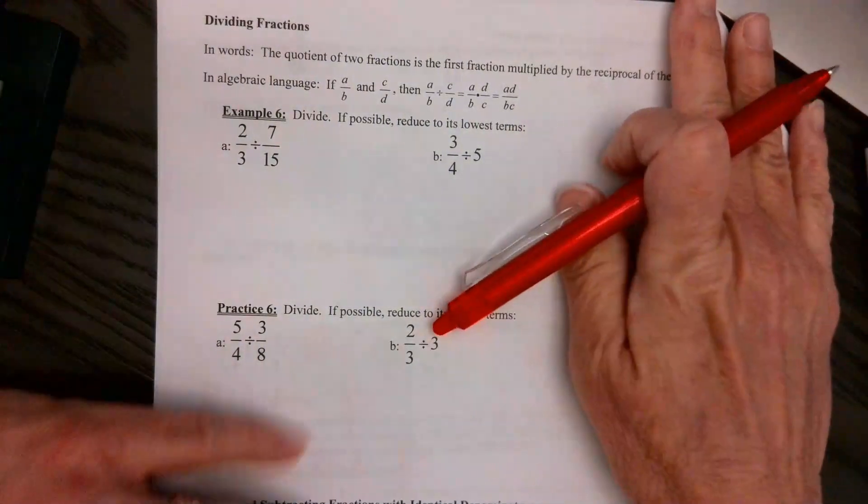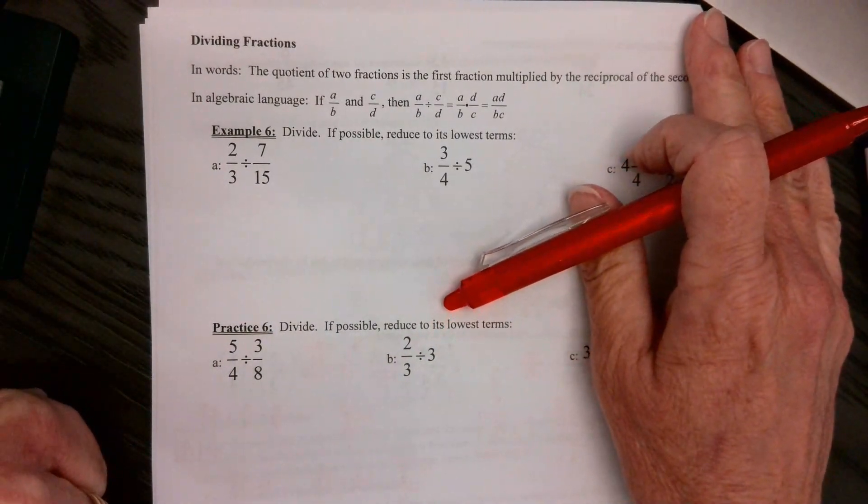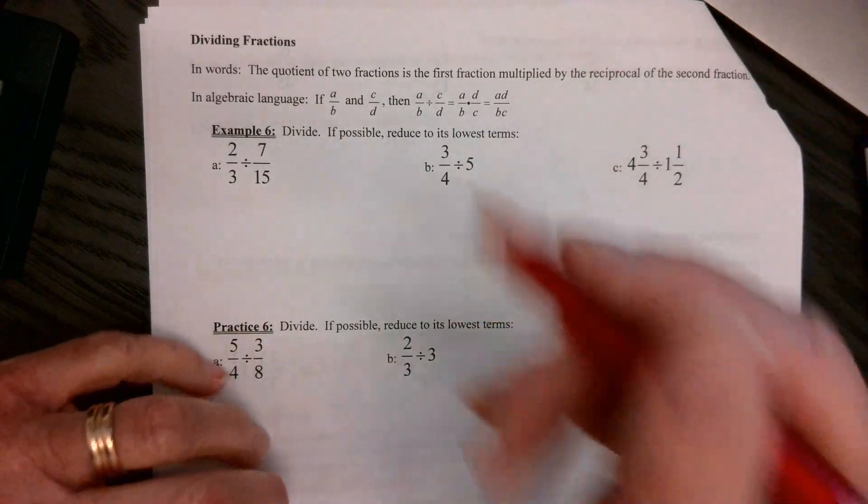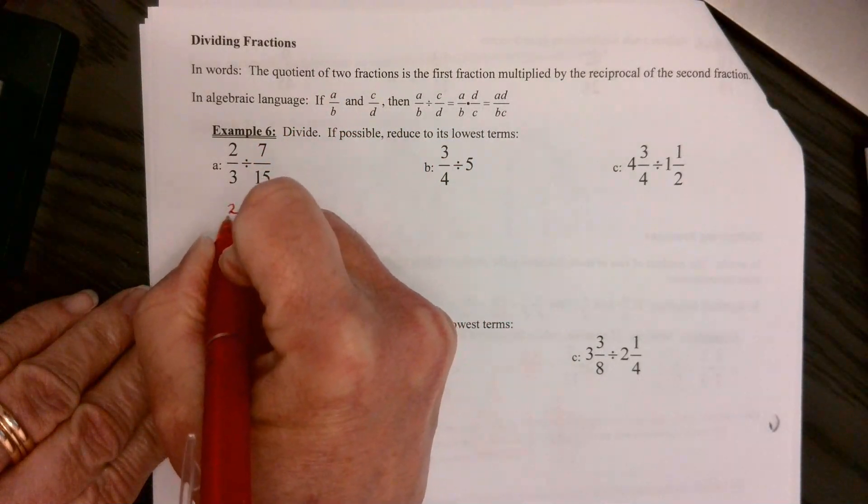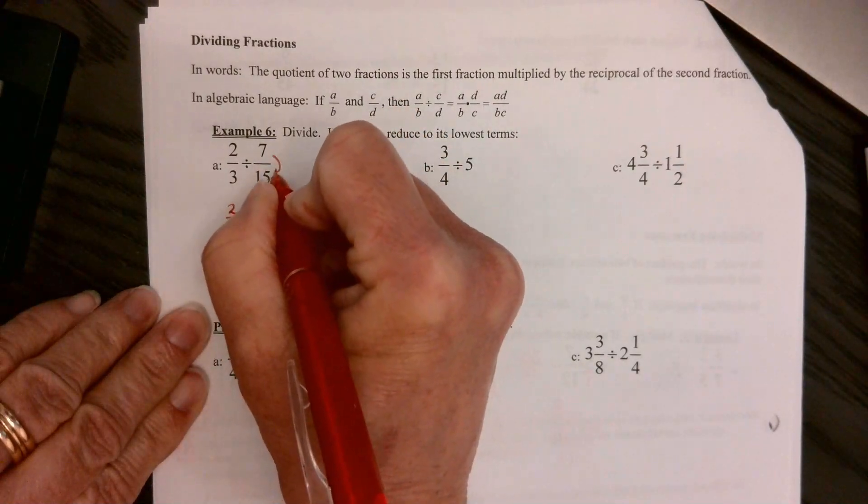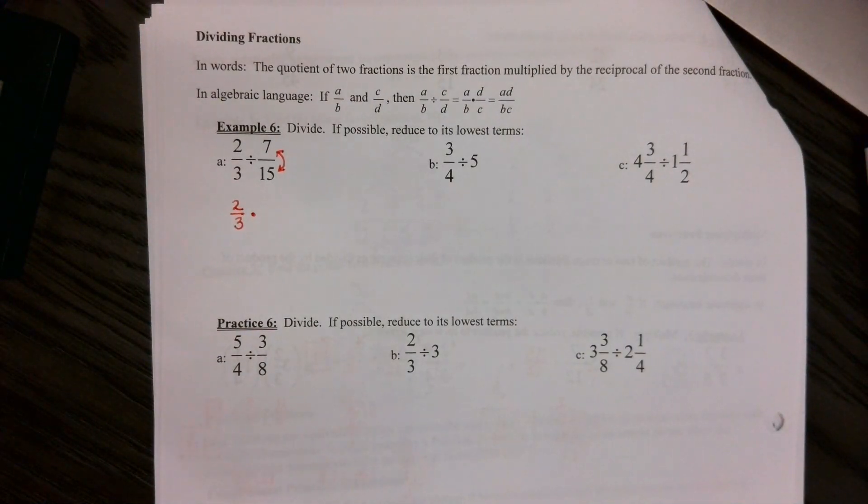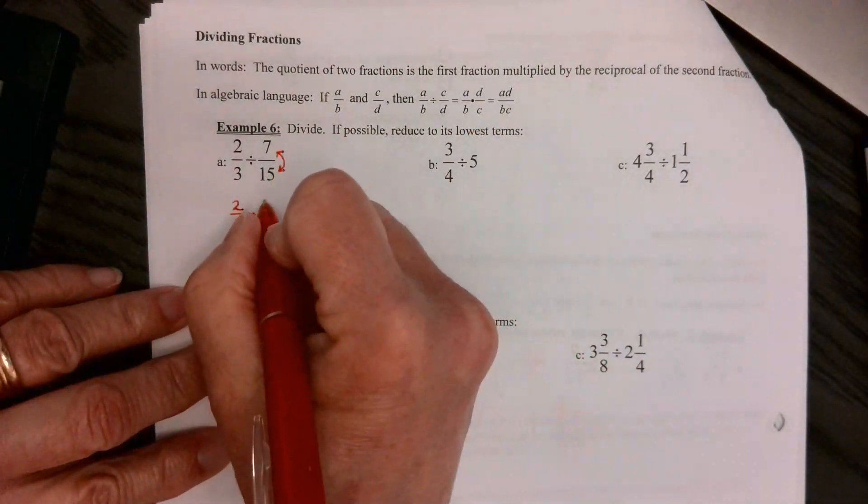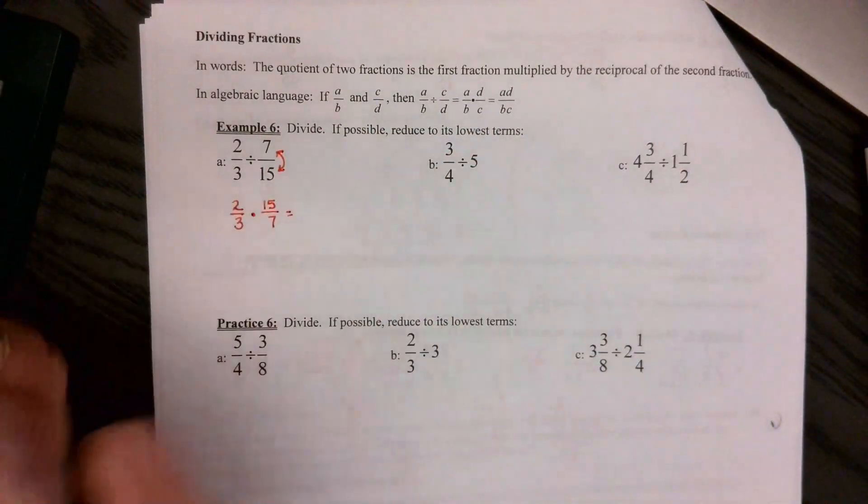Moving right along to division. If you can multiply, you can divide. Again, it's not hard. Because what you're going to do is you never actually divide fractions. You change them into multiplication problems. So what you're going to do is you're going to rewrite the first fraction. You're going to change division to multiplication. And then you're going to multiply by the reciprocal of 7/15. The reciprocal just means to flip it. So it would be 15 over 7. Now it's just a multiplication problem, just like we did.